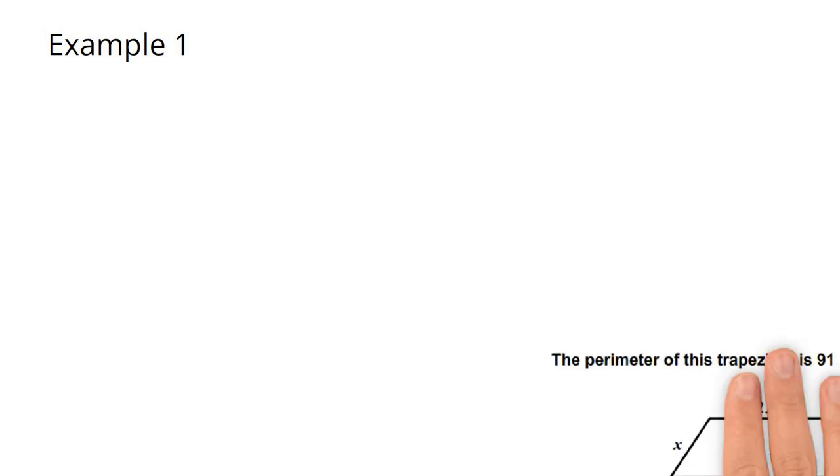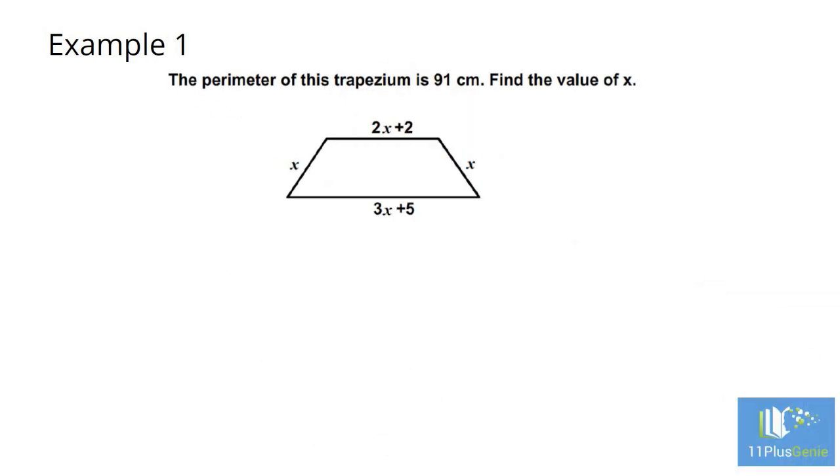Example 1. The perimeter of this trapezium is 91 cm. Find the value of x. To find the perimeter, we must add all the sides together.